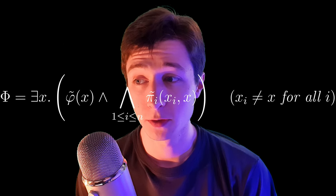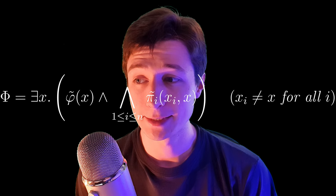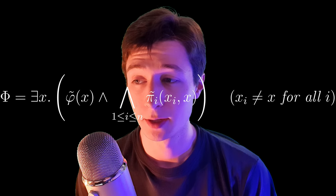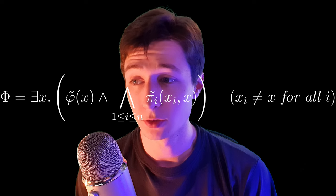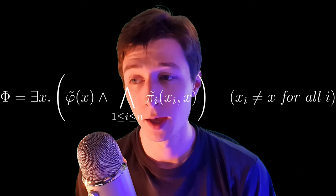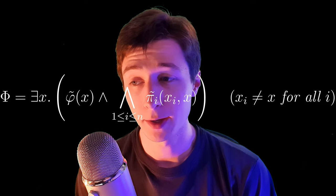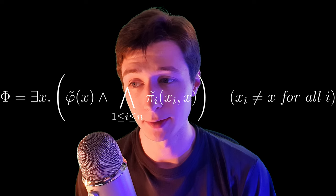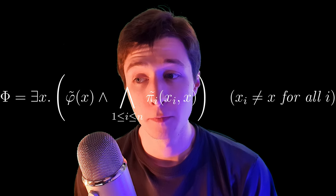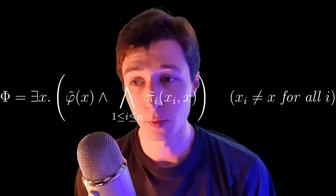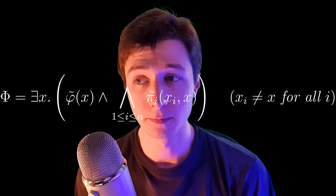Phi equals exists x such that phi tilde of x, and the conjunction from i equals one to n of pi i tilde of xi and x, where xi is different from x for all i.